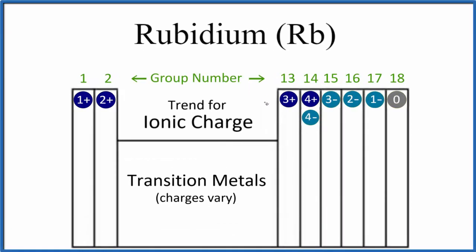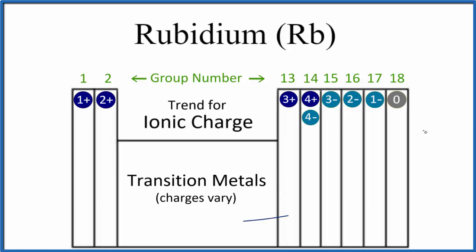In this video we'll look at the ionic charge for rubidium, that's Rb. So the question is, when rubidium forms ionic bonds, what charge does it have? We can use the periodic table with this general pattern for ionic charge.